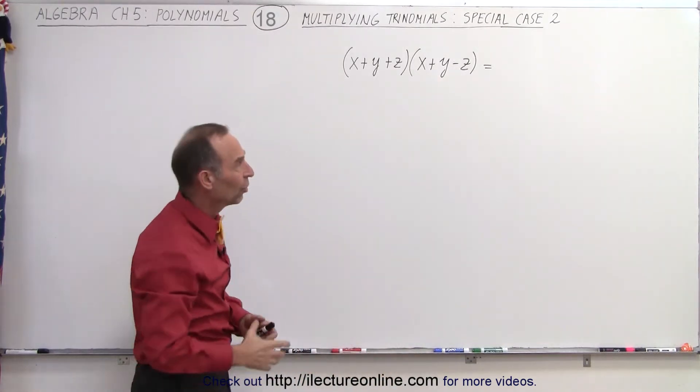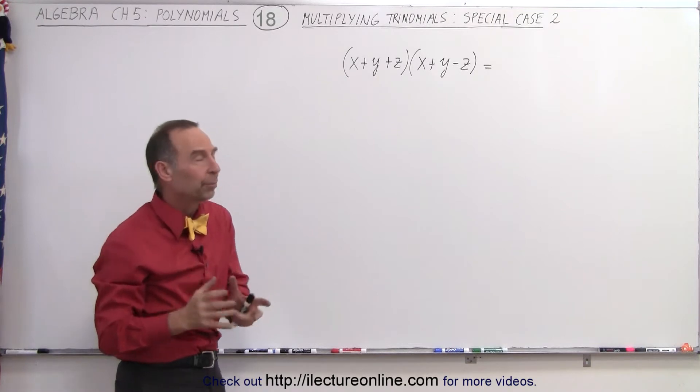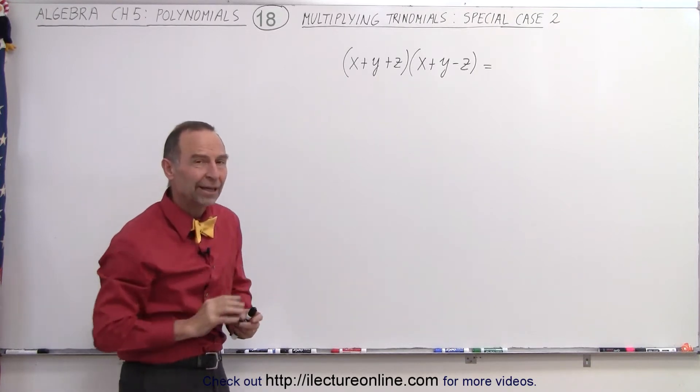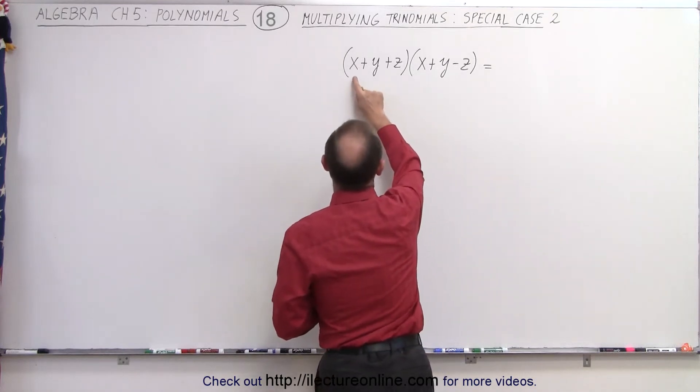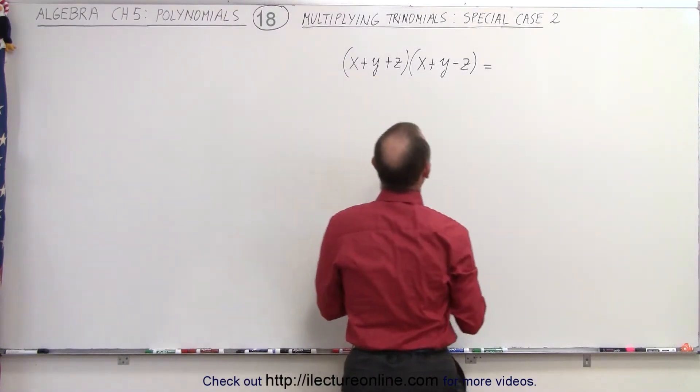How does that change things? Well, it turns out that the result of that product will only have four terms instead of six terms. The first three terms are exactly as if you were to multiply x plus y times x plus y.